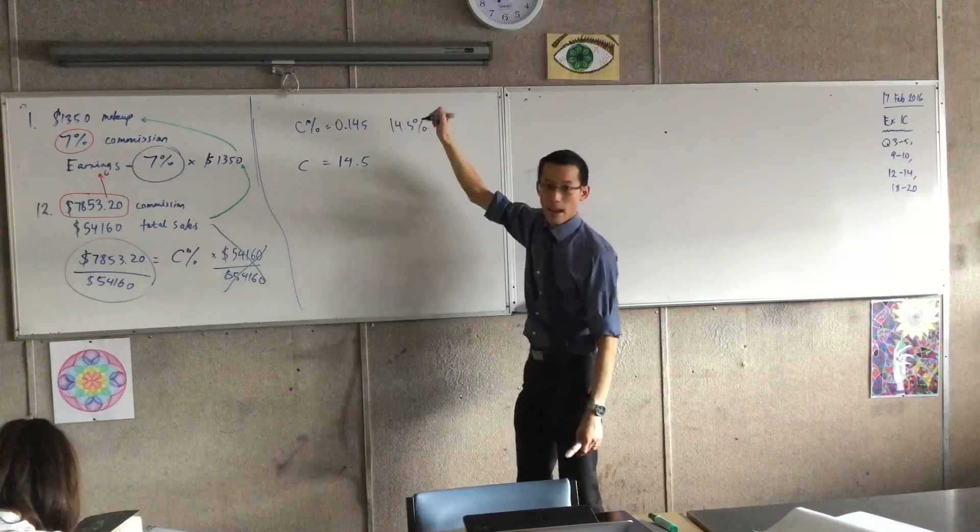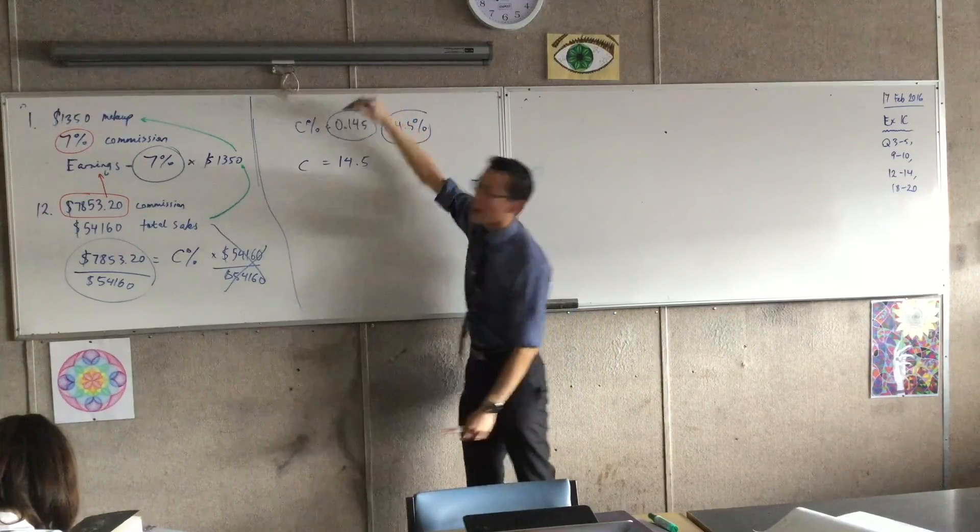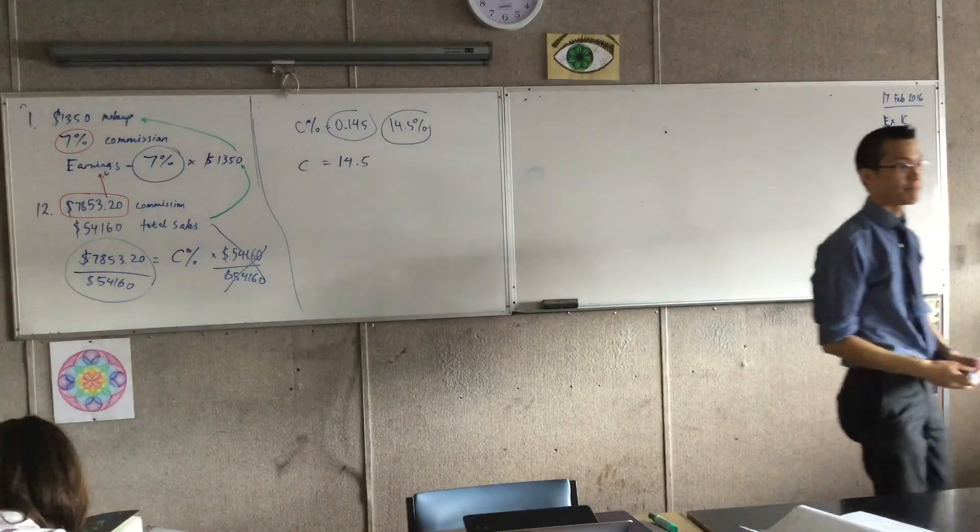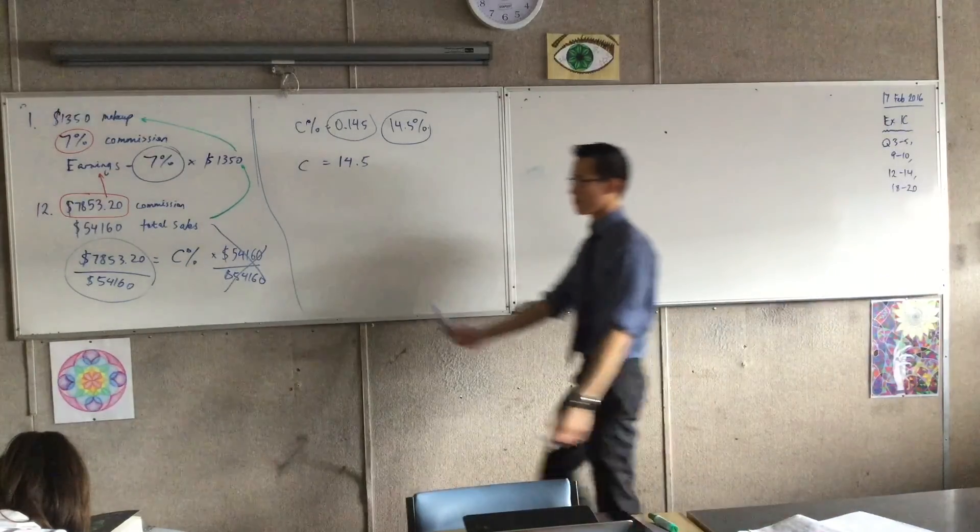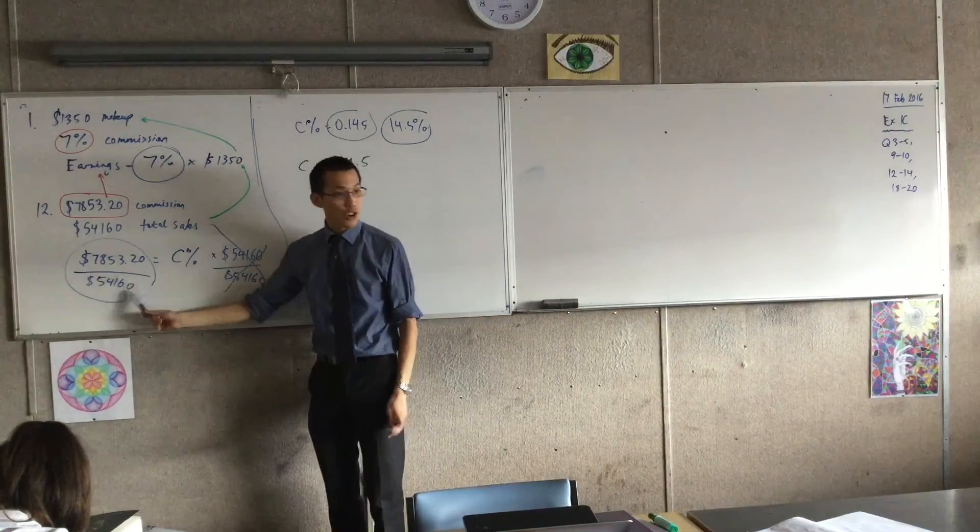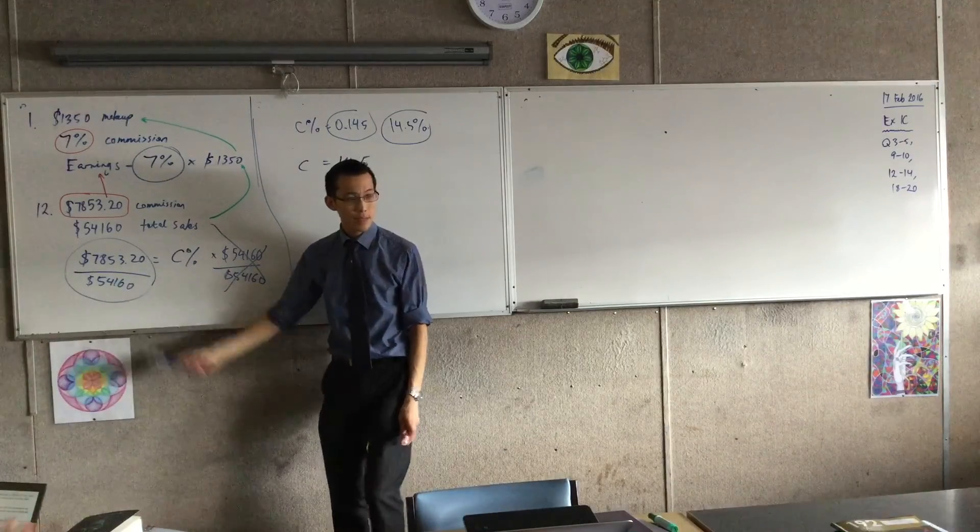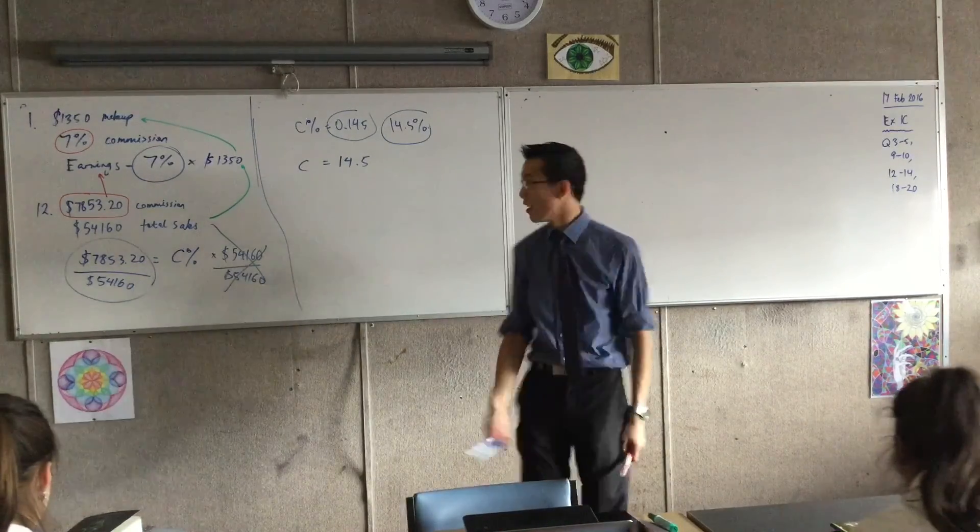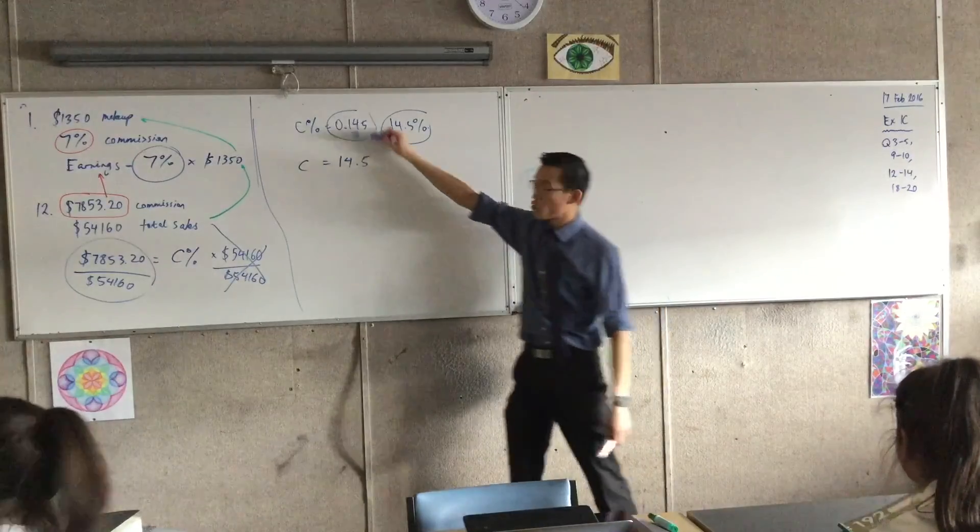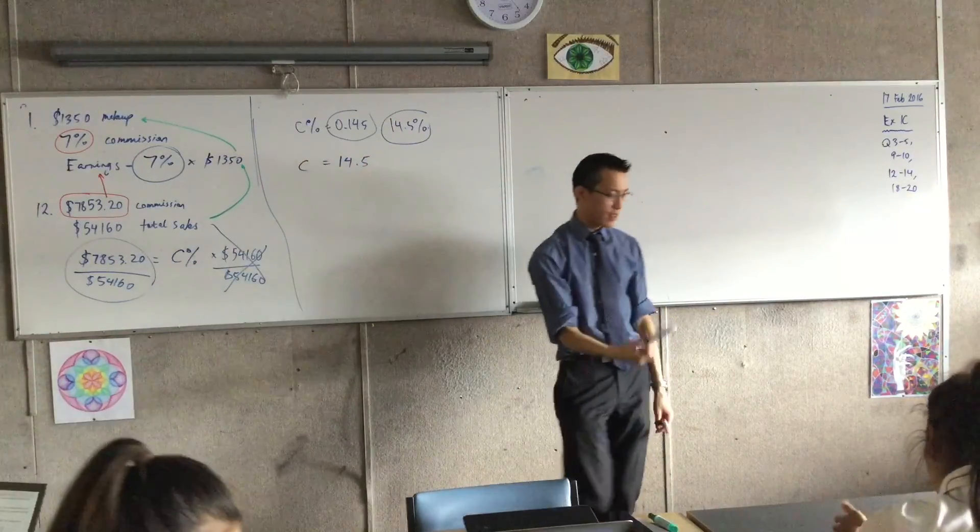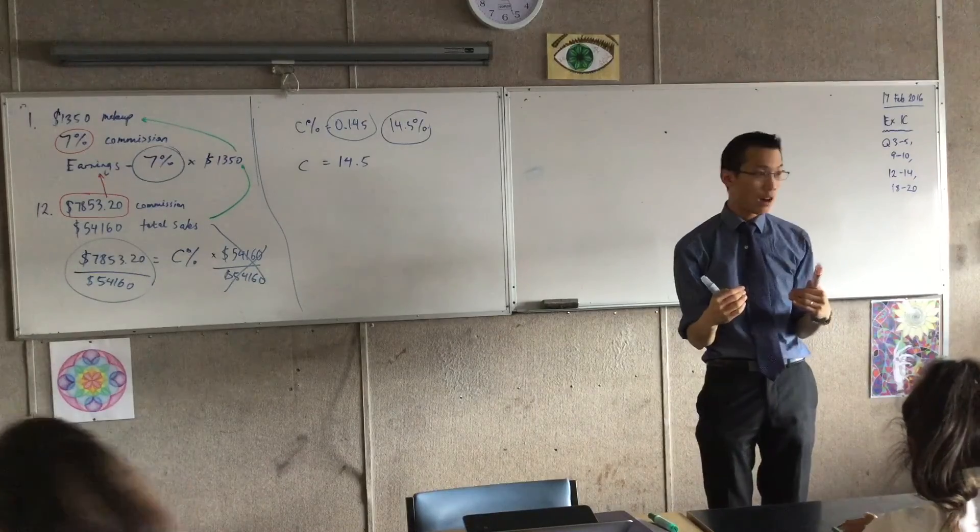But had you written this, that would be okay, because this number and this number are the same. Okay, so if you got this and you wrote that down, so long as you actually say that you're multiplying by a hundred, that you show the transition.